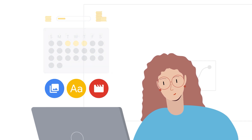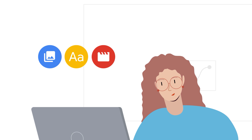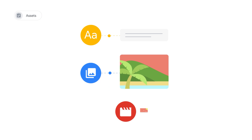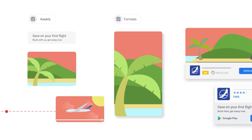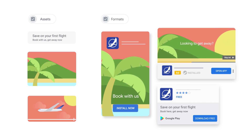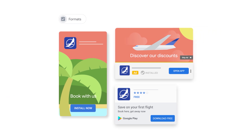With few levers to pull, creative asset strategy is crucial for success with app campaigns. First, let's understand the foundations of assets and ad formats — what's the difference? Assets are the inputs, or the building blocks that you provide during campaign creation. This includes lines of text, images, and videos. An ad format is the way that the assets are combined to create an ad that is best for the user and your goal. This is the ad that gets surfaced to end users across different Google properties.